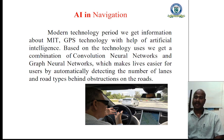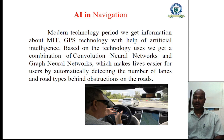Artificial intelligence has spread to every corner of the world. In the modern technology period, we get information about MIT GPS technology with the help of artificial intelligence. Based on the technology, users get a combination of convolutional neural networks and graph neural networks, which makes life easier by automatically detecting the number of lanes on the road and the types of obstructions on the roads.